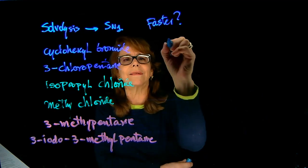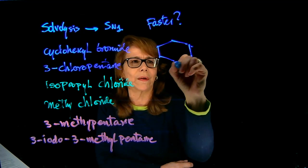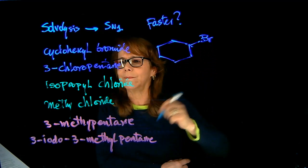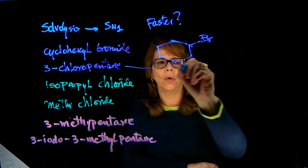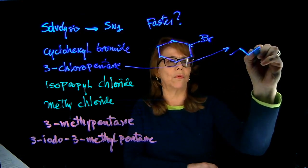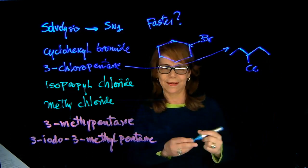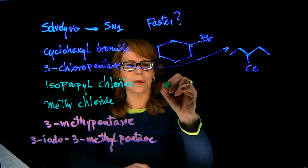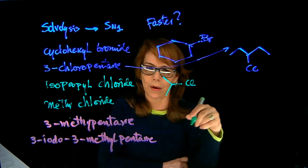Let's draw the structures. Cyclohexyl bromide is compound number one. The other is 3-chloropentane — a five-carbon chain (1, 2, 3, 4, 5) with chlorine at carbon 3. And then isopropyl chloride: a three-carbon chain (1, 2, 3).